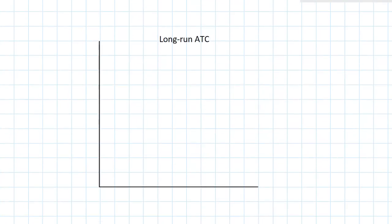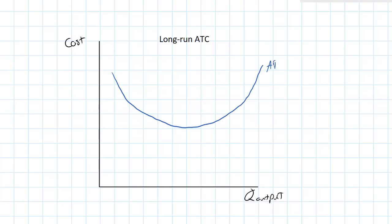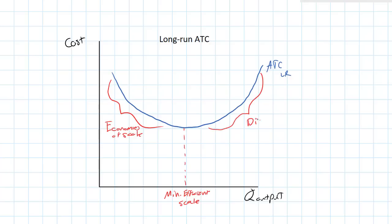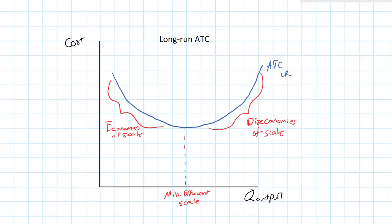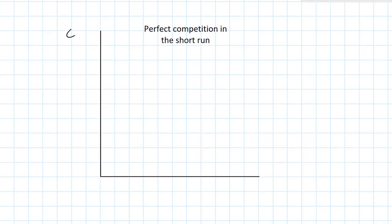Let's look at the long-run average total cost curve. This is basically the same shape as a short-run ATC curve; the only difference is the explanation for why it slopes down and up. When ATC is decreasing, the firm is experiencing economies of scale. When it reaches its lowest point, the firm has achieved minimum efficient scale. When ATC is increasing, the firm is experiencing diseconomies of scale or decreasing returns to scale. The shape of the ATC is the same in both the short and the long run; the only difference is the explanation for that shape.